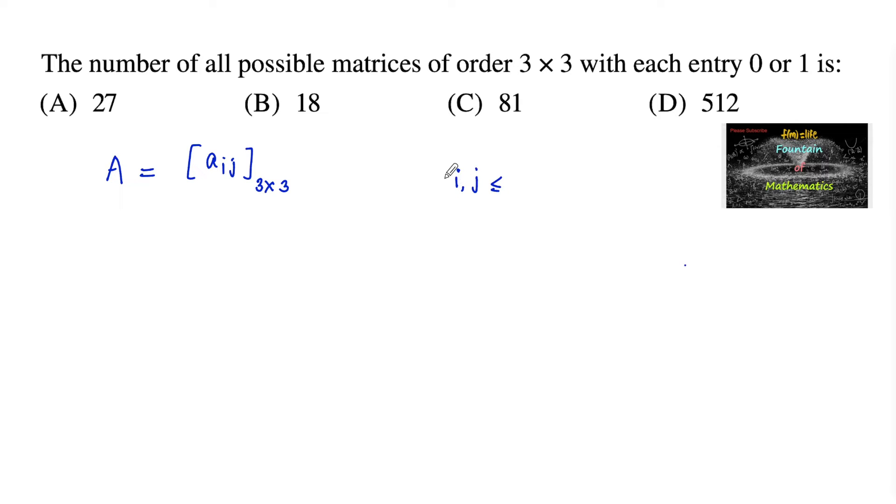The number of elements in matrix A is equal to total 9 elements. Each entry, that is Aij, can be either 0 or 1 for i, j lies between 1 and 3.